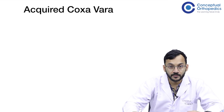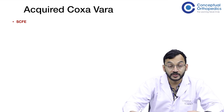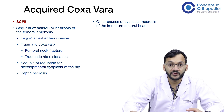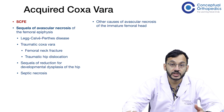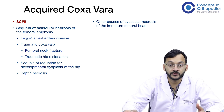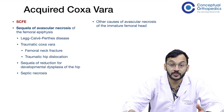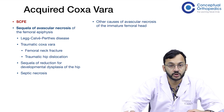The most common cause of acquired coxa vera is SCFE. Other causes include sequelae of avascular necrosis of the femoral epiphysis, which can result from Perthes disease, traumatic femoral neck fracture, traumatic hip dislocation, forcible reduction of DDH leading to AVN, septic necrosis of the femoral head, or septic arthritis sequelae, and other rare causes of AVN of the immature femoral head.